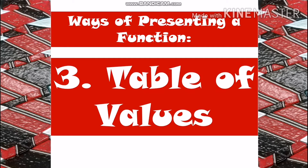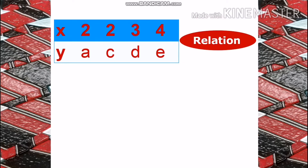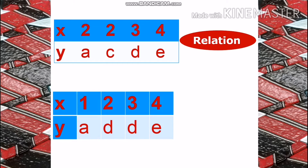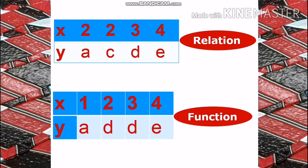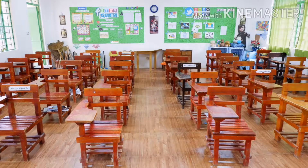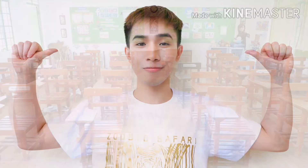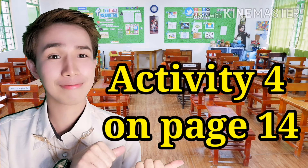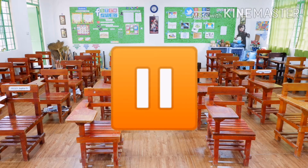For table of values, just like sets of ordered pairs, we check if there is a duplicated abscissa or x value with different y values. The table above is a relation because 2 is repeated. The one below is a function because there is no repeated x value or no x value with two different y values. Please refer to page 14 of your module and answer activity 4 by identifying if the given table of values is a function or a mere relation.